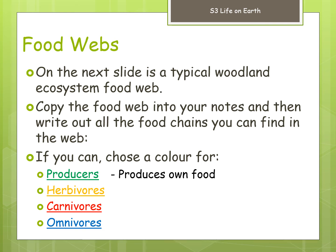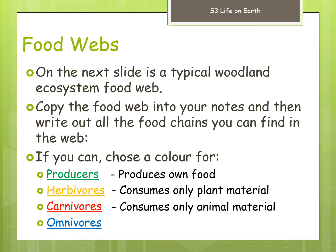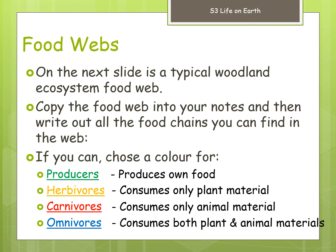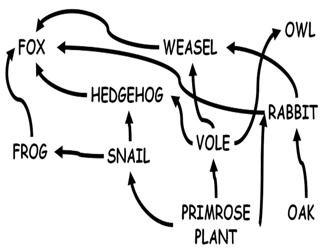Producers produce their own food. Herbivores are a type of consumer that consumes only plant material. A carnivore consumes only animal material — for instance, a mosquito is a carnivore because it consumes blood, which is animal material, so we say animal material rather than just meat. Omnivores eat both — you guys are omnivores; humans are designed to consume both plant and animal materials. Here's the example of a food web from a woodland ecosystem.